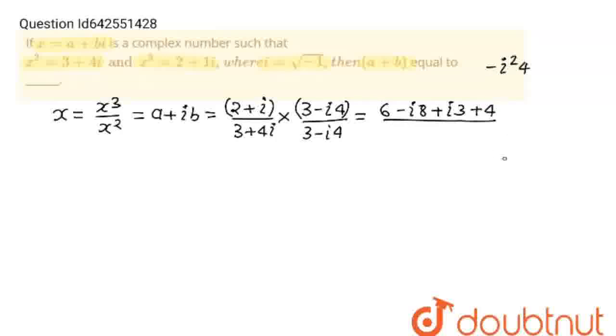this is z, then this is mod z. And we know that a plus iota b into its conjugate a minus iota b is equal to a square plus b square. So this will be 3 square plus 4 square.